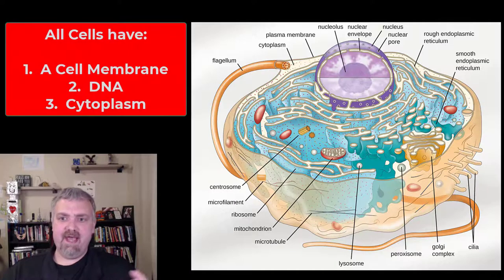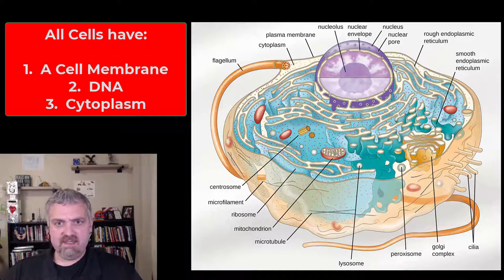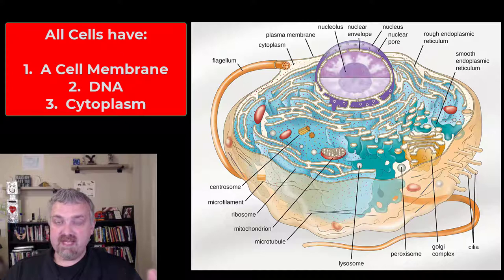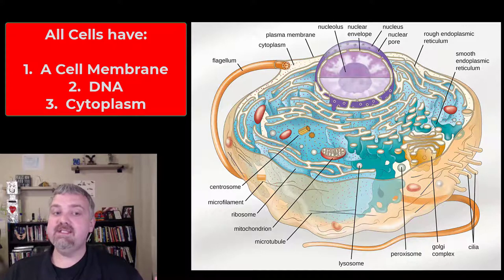All cells are going to have a cell membrane. They're all going to have genetic material like DNA. They're all going to have a cytoplasm. There are lots of differences between cells but those are some of the key similarities you're going to see.